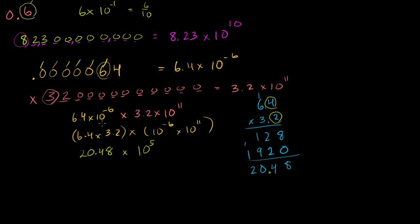Now, is 20.48 times 10 to the fifth in scientific notation? If you want to be a stickler about it, it's not quite right. We can divide this side by 10 and multiply the other side by 10 — that doesn't change the number. Dividing 20.48 by 10 gives 2.048, and multiplying 10 to the fifth by 10 gives 10 to the sixth. So the answer in proper scientific notation is 2.048 times 10 to the sixth.